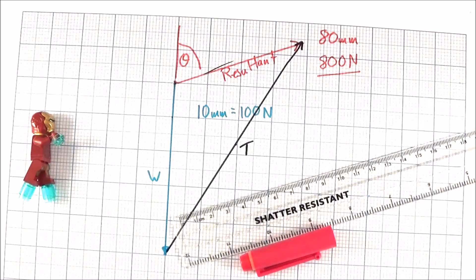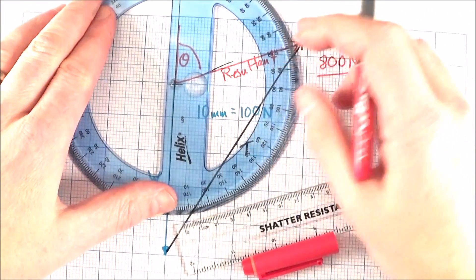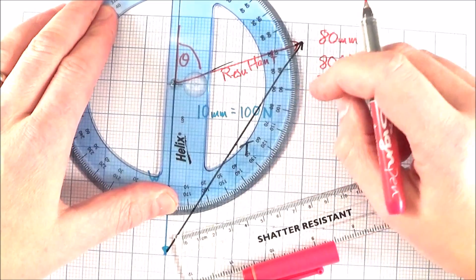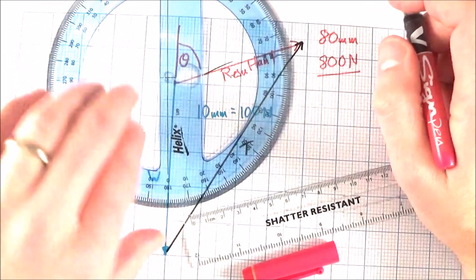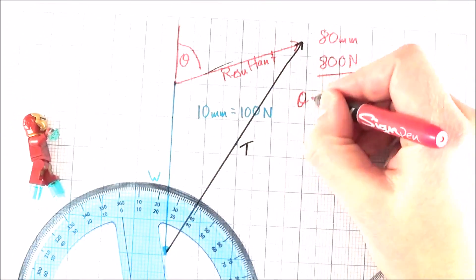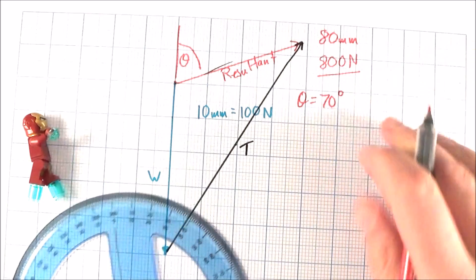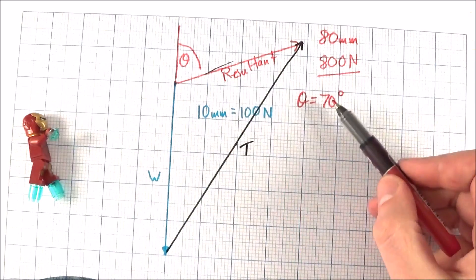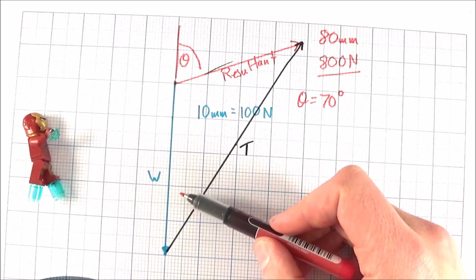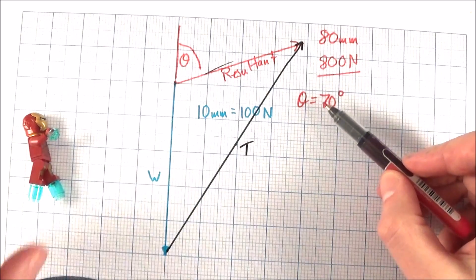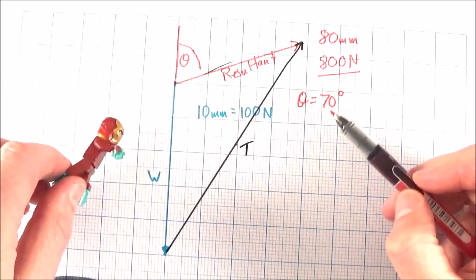I can then just use my protractor and I can measure that angle is about 70 degrees. So the angle theta is equal to 70 degrees. So what I can say here is that the resultant of the forces on Iron Man are equal to a force of 800 newtons at 70 degrees.